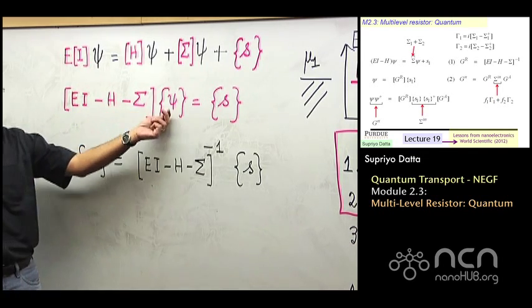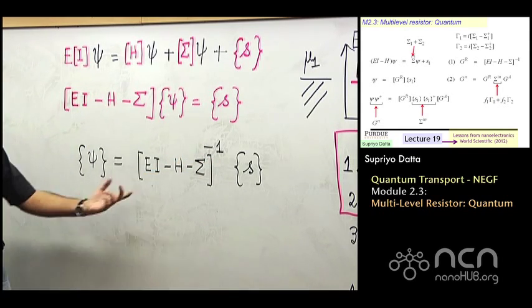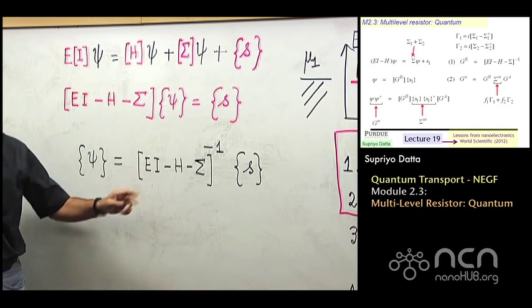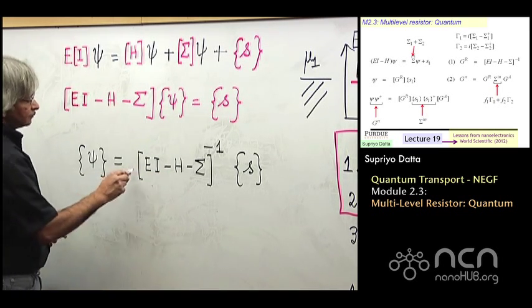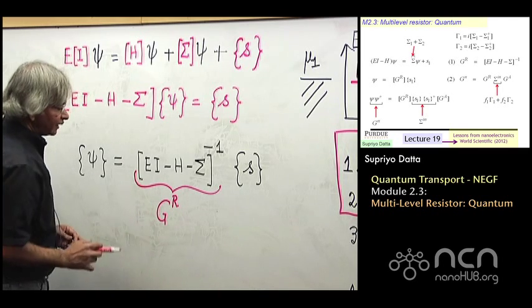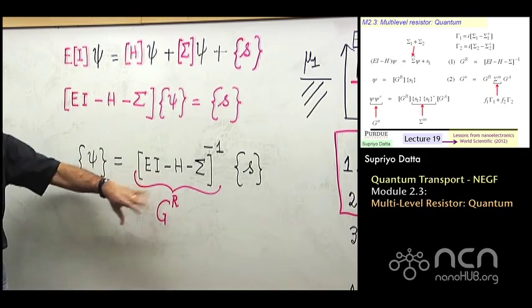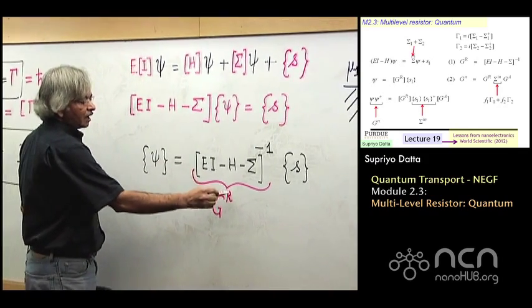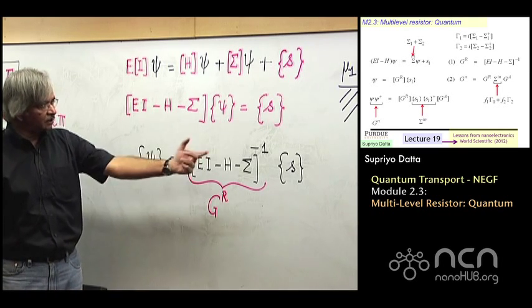So all I've done is, here's a matrix times psi equals S. So psi is equal to that matrix inverse times S. And this matrix is called the Green's function. Actually, there will be another one that I'll be including, which is the non-equilibrium Green function, which gives the name NEGF to this whole method. But this one is called the retarded Green's function. This quantity, it's written as GR, and that retarded is not meant to be an insult or anything. It's got a scientific basis that I'm not going into. So there's this G with a R as a superscript. The retarded Green's function for the device. And so psi is equal to GR times S. That's the basic result.